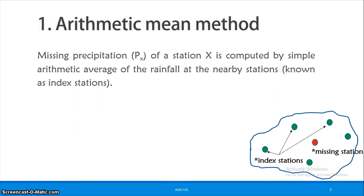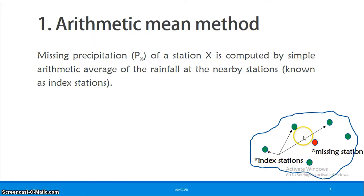The first method is the arithmetic mean method — a simple average method. In the catchment, there is a network of rain gauges. One station has no data and is called the missing station X. The other stations around it are called index stations. We will predict the missing precipitation Px of station X using the rainfall values of the nearby index stations.